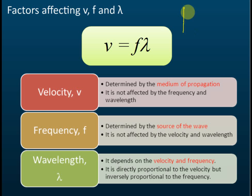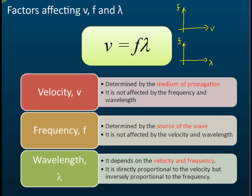Sometimes in exams, they will give you a graph and ask which one is correct — for example, frequency against velocity, or frequency against wavelength. Many students see that frequency and v appear in the same formula and assume they are directly proportional, meaning if velocity increases, frequency increases. So they sketch a graph showing a straight line, but this is not correct.